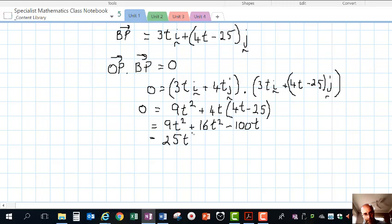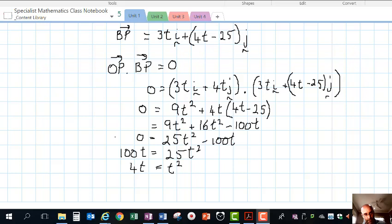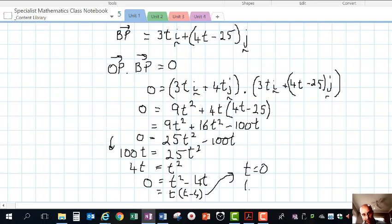We have 9t² + 16t² - 100t = 25t² - 100t = 0. So 100t = 25t². Going back: 0 = t² - 4t. We can factorize that, getting t outside: t(t - 4) = 0. There are two solutions: t = 0 using the null factor law, or t = 4 seconds.